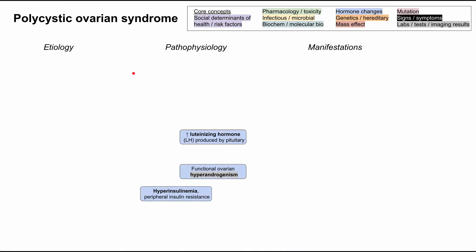Let's talk about three main hormone changes that are involved in the pathophysiology of polycystic ovarian syndrome. First, these people tend to have hyperinsulinemia — that's high insulin in the blood — and that usually comes along with a peripheral insulin resistance. Second, patients tend to have hyperandrogenism — that's high levels of testosterone and other precursors to testosterone — called functional ovarian hyperandrogenism. Lastly, there's high luteinizing hormone, that's high LH, and that's produced by the pituitary.